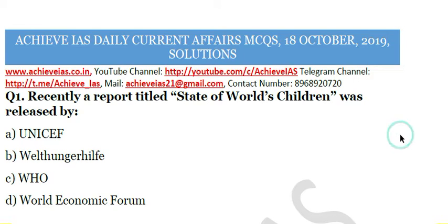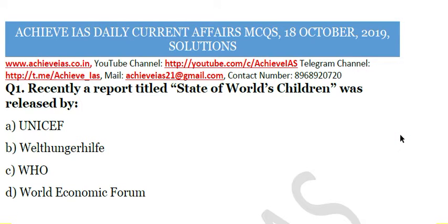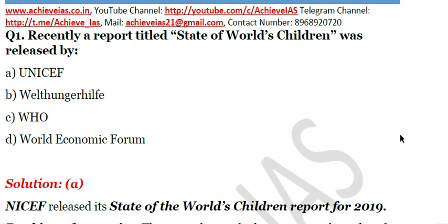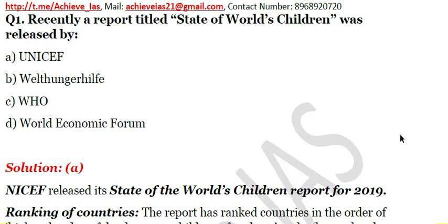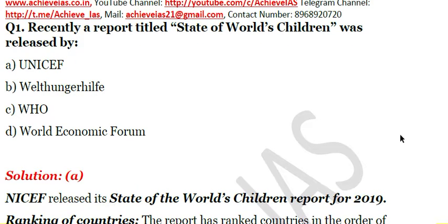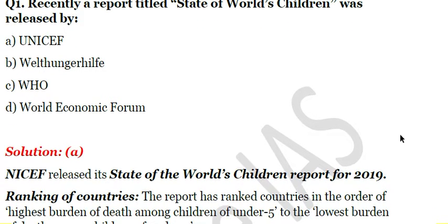The first question is: recently a report titled 'State of World's Children' was released by — A) UNICEF, B) World Hunger Health, C) WHO, D) World Economic Forum. The answer is UNICEF. This is the State of World's Children report for 2019, released by UNICEF.